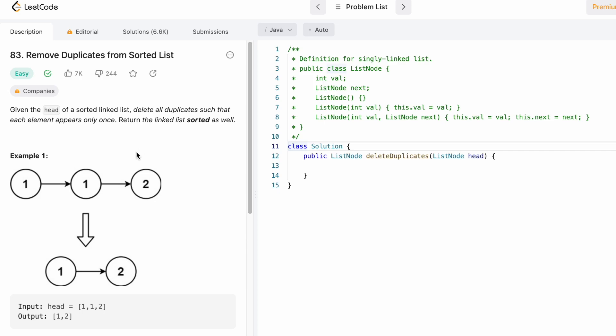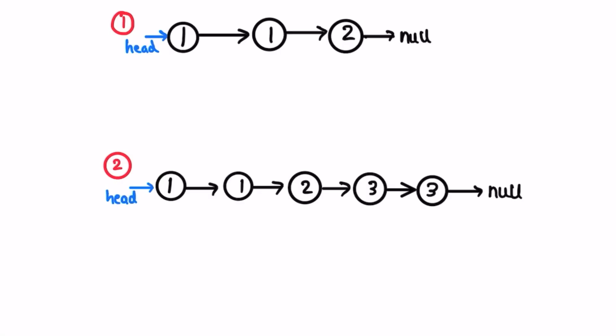Let's take a look at the first example and see how this question can be solved. The head is pointing at the first node and the last node is pointing to null. It asks us to remove duplicate elements, meaning if there are duplicates both of them will be adjacent to each other. In this case these two are duplicates, so we have to remove one of them.